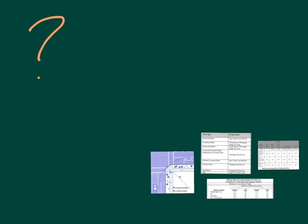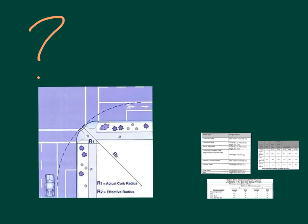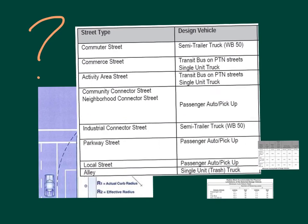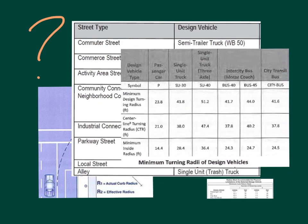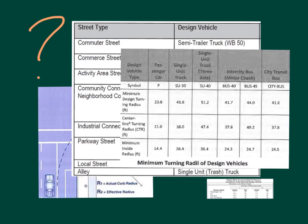How can we know if a given curb return radius is the best choice for the setting? Does the geometry of the intersection influence the path of the turning vehicle? Can we identify the appropriate design vehicle for the setting? Can we locate the associated minimum turning radius for the design vehicle? Are there standard curb return dimensions that we can find in a lookup table and immediately adopt for our design? These are the questions that motivate our future lab activity.